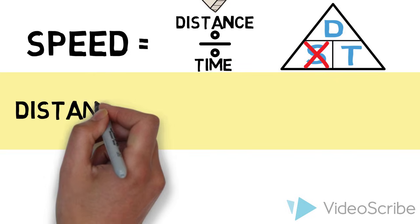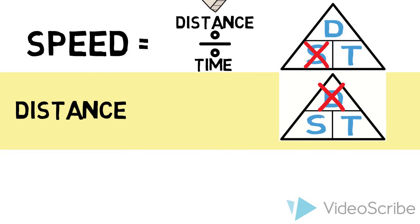For distance of an object, cover up the D. This leaves S and T. As they are next to one another, this shows you need to multiply them.